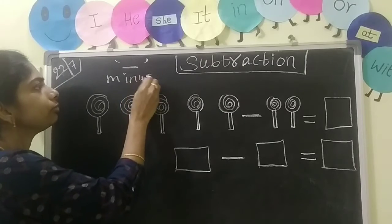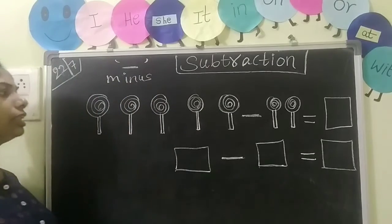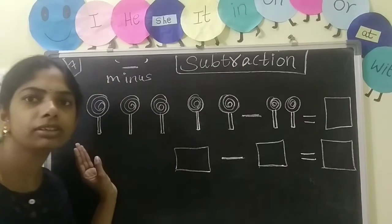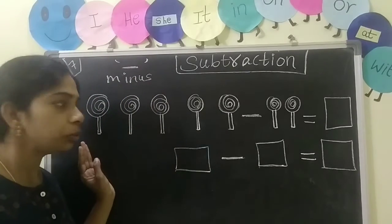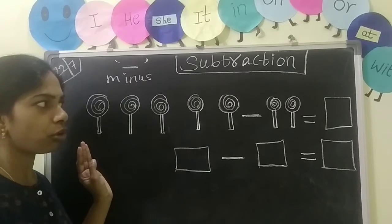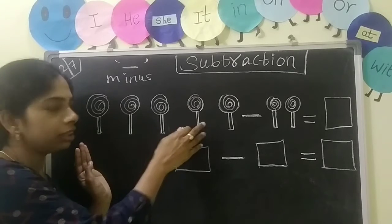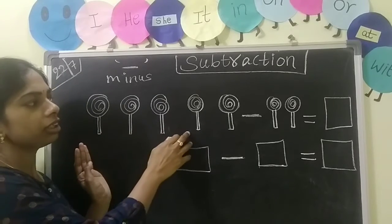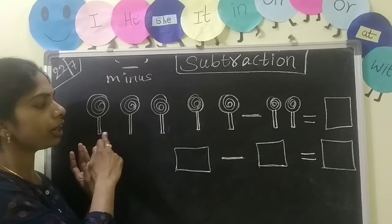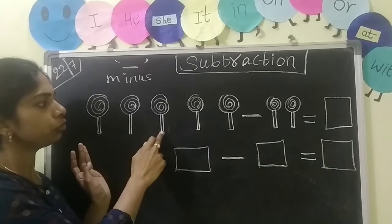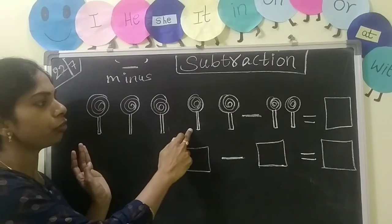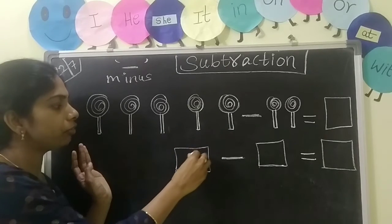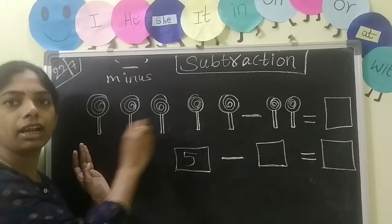See this picture everyone. Here I have drawn candies. How many candies are there? 1, 2, 3, 4, 5. There are 5 candies.